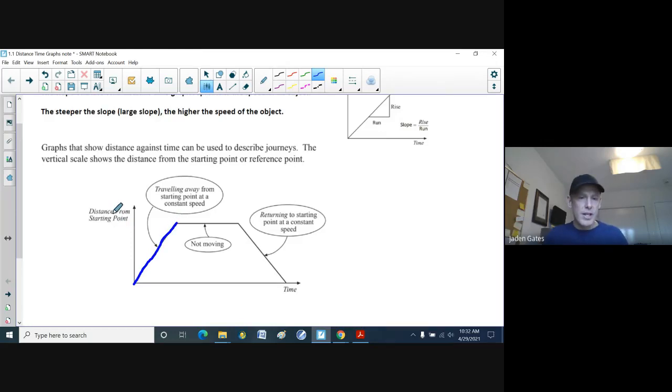that means your distance is increasing from where your starting point is as time goes by. And so you're traveling away from a starting point at a constant speed because it's a nice straight line. But then when you get to this red line, time is going by, but yet no distance is being increased or decreased. So that means the object is not moving. And then when you get to the green part, now you are moving. But in this case, your distance is decreasing from the starting point, which just means you're walking back.